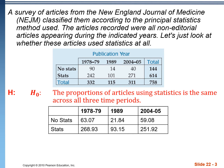The way we calculate these — for this cell, for example — we would take the whole row total, 144, multiply it by the column total, 332, and divide by the grand total. We do that for every cell. That's how many were supposed to be in each category if these proportions actually are the same.